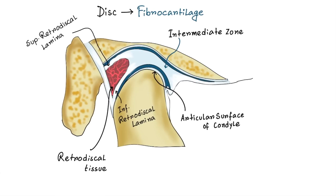You should remember that the inferior retrodiscal lamina is composed of collagen fibers, not elastic fibers like the superior retrodiscal lamina. The remaining body of the retrodiscal tissue is attached posteriorly to a large venous plexus which fills with blood as the condyle moves forward.